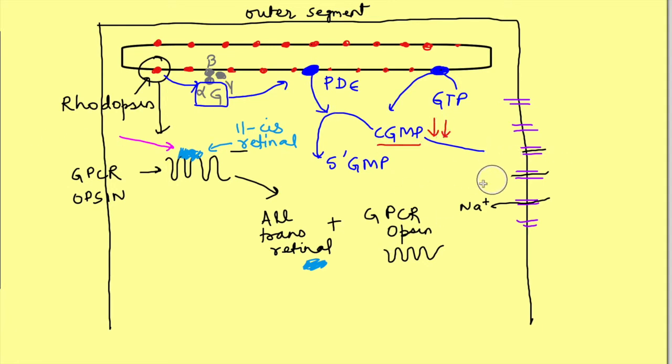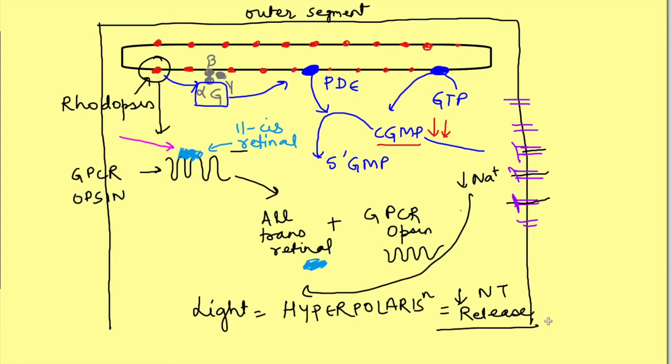This leads to closure of cGMP-dependent sodium channels, thus decreasing sodium entry into cells and causing hyperpolarization. This decreases the neurotransmitter release. So in light, the cell is hyperpolarized and the release of neurotransmitters is less.